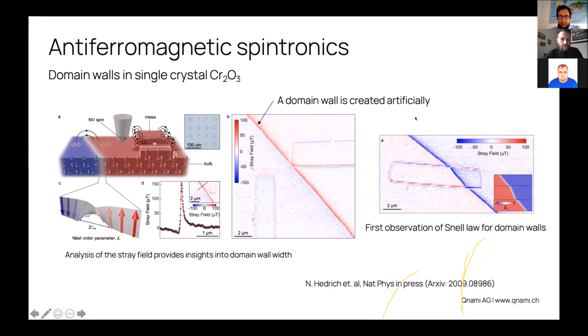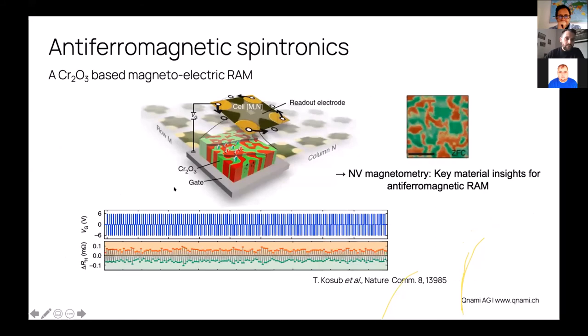The author further shows that you can manipulate those domain walls—you can engineer, you can push them around, and you can pin them to certain parts of the mesa, in fact allowing to create bits zero and one. The author goes as far as proposing a new architecture for a memory, so I invite you to look into this reference for more details. To finish with chromium oxide, there's been a memory which was engineered a couple years ago, a fully magnetic MRAM that can be manipulated through electrical gates. The manipulation is still quite slow, but here again NV magnetometry provided key insights into the phase of these materials.